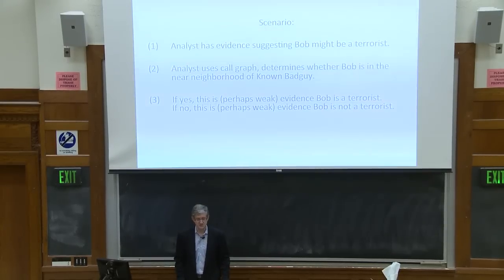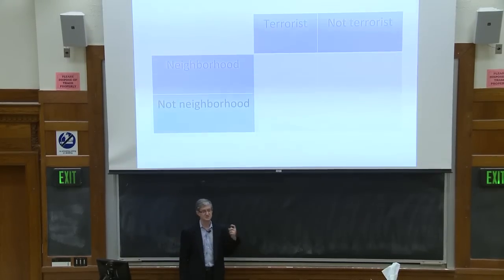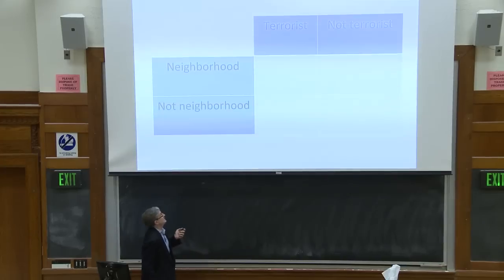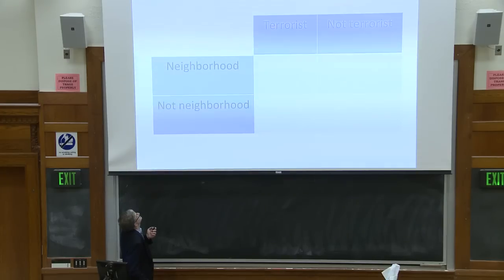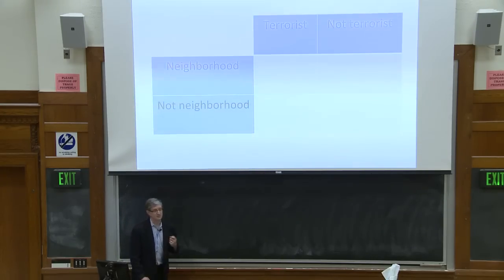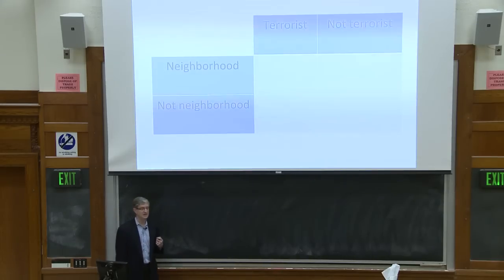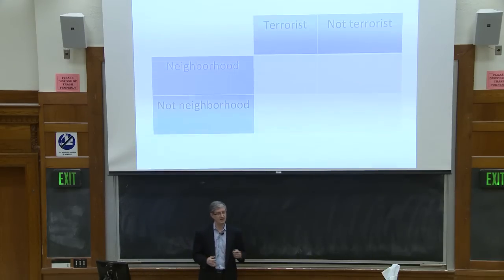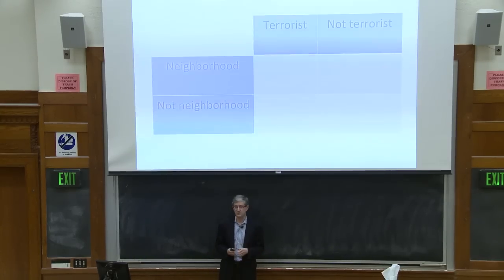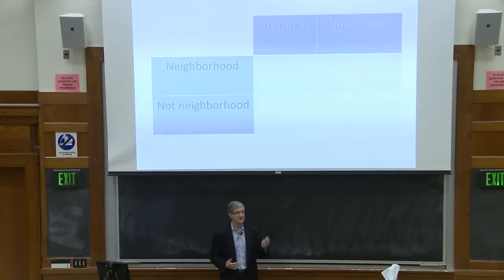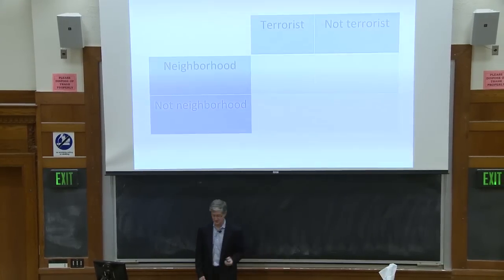We'll use Bayesian reasoning, which I'll express as a table rather than equations. This table has four combinations: columns for whether Bob is a terrorist or not, and rows for whether Bob is in the near neighborhood of known bad guy or not. We can talk about the probability of being in each box, and then ask: if we see that Bob is in the near neighborhood, what's the probability that he's a terrorist? If you're comfortable with Bayes' law, you can imagine the equations — it's the same thing.